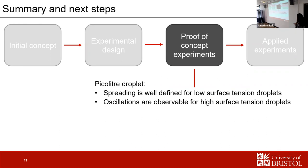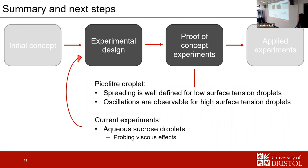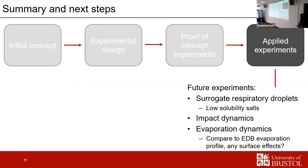I'm now beginning to look at hemoglobin-sucrose droplets to probe viscous effects, which is leading to further experimental changes. Once optimized, I'll move on to applied experiments with surrogate respiratory droplets. The ideal end-goal experiment would be to compare the evaporation dynamics of droplets on a surface with EBB measurements of droplets on the surface, to see whether there are any surface effects.